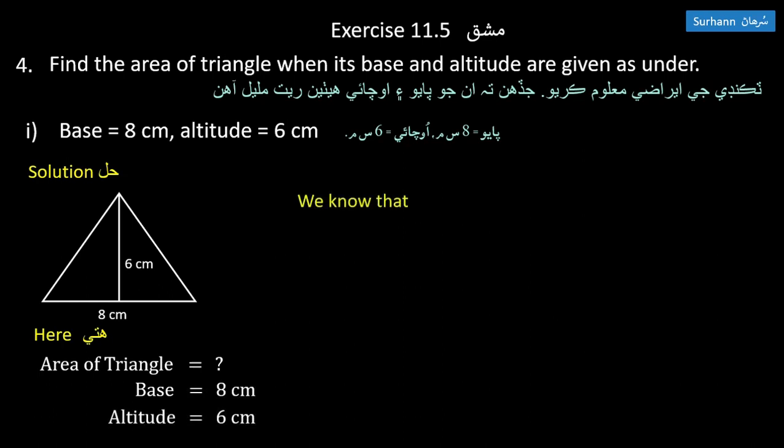Area of triangle equals one-half times base times altitude. Using the formula, area equals one-half times 8 times 6, which equals 24 square centimeters.